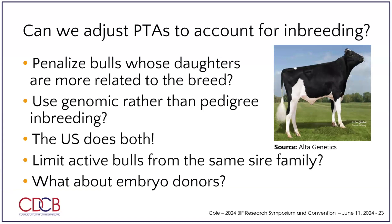So what do we do about it? Can we do something in the breeding values to manage inbreeding? We actually do in the United States — when we calculate a breeding value for a bull, we subtract off the effects of future inbreeding. If it's a bull who's highly related to the population and expected to increase the level of inbreeding, we reduce his PTA. If he's an outcross bull, his PTA might get bumped up a little bit. We also switched to using genomic inbreeding in place of pedigree inbreeding about a year ago.